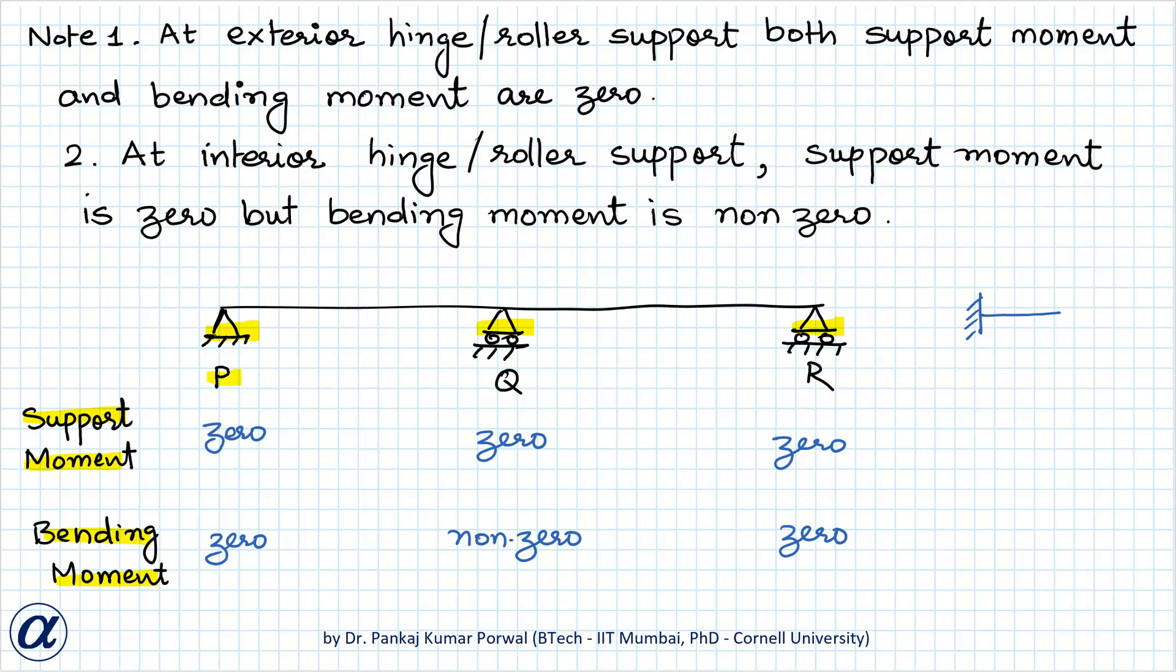In this example at P, Q and R we have either hinge or roller support. So, support moments provided by all these supports will be zero. Now, bending moment is resultant of all the bending stresses at any cross section and the bending moment at exterior hinge or roller support is zero whereas the bending moment at interior roller or hinge support is non-zero. This you have to keep in mind. So, at exterior hinge or roller support both support moment and bending moment are zero whereas at interior hinge or roller support support moment is still zero but bending moment is generally non-zero.